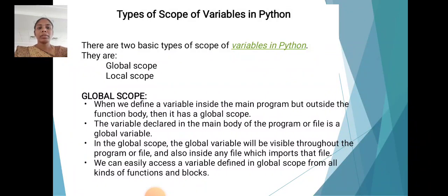Global scope: when we define a variable inside the main program but outside the function body, then it has a global scope. The variable declared in the main body of the program or file is a global variable.